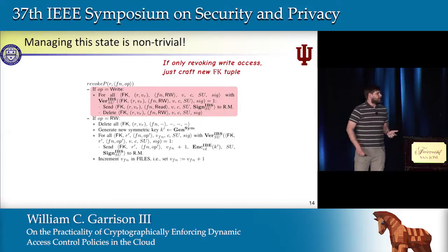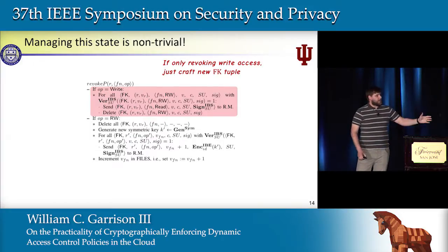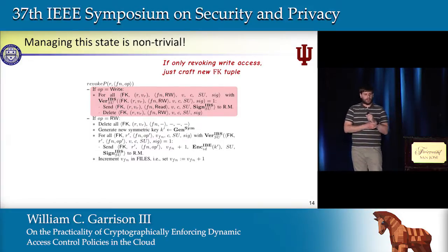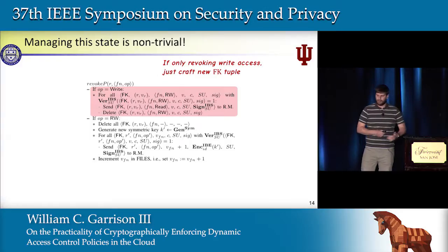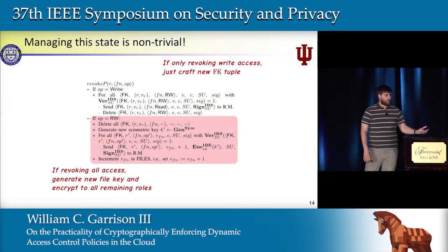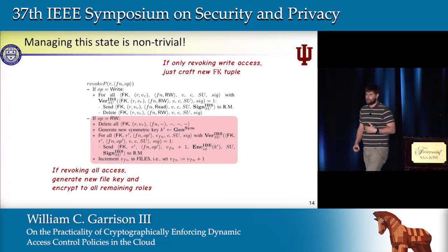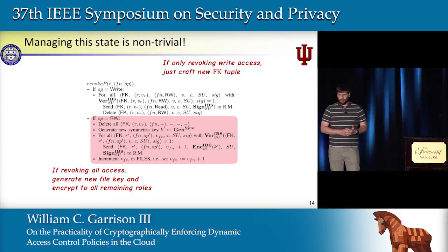There are two situations here. One, where we're revoking only write access and leaving the user with read-only access—in which case we download the file key tuple, generate the new version now specifying read-only as the permission, re-encrypt it, re-sign it, and re-upload it. However, if we're revoking all access, this is the scenario in which we need to re-key: we'll generate a new file key, encrypt it to all the remaining roles, and upload it onto the server.